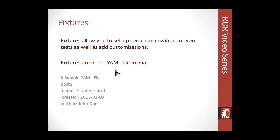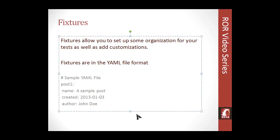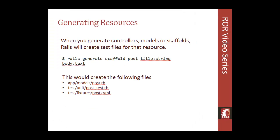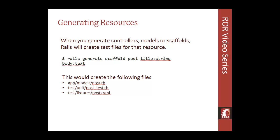You can also use embedded Ruby in YAML files, using the percent tags if you want to put some dynamic content in there. You can access fixtures in other files as well. For instance, if you're in the post fixture and want to access 'post_one', you can reference it directly, and you can also access specific fields like 'post_one.name', which would return 'a sample post'.